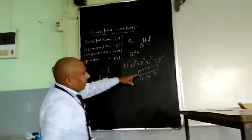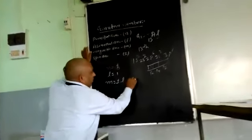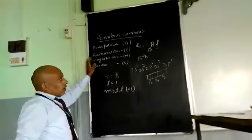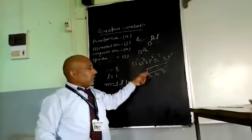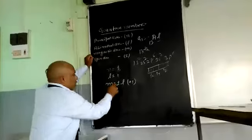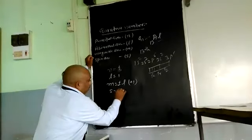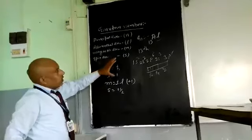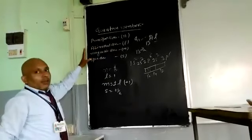So electron is present in px suborbital, so its value is plus 1. Only one electron is present, that is in upward direction, so its spin quantum number value is plus half. So this is the calculation of this type of quantum number.